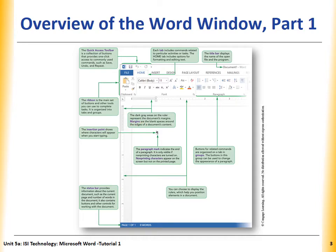Here we have something called Groups. This one, for example, is called the Paragraph Group — it's called Groups. Here we have the Status Bar. And finally, here we have something called the Paragraph Mark. You see this opposite P? It's called the Paragraph Mark. It indicates the end of the paragraph, and it's only visible if the non-printing characters are turned on.